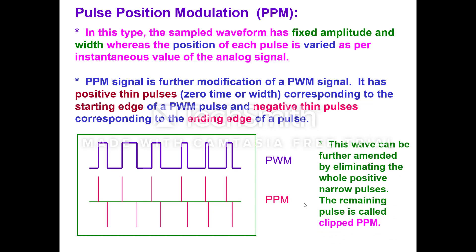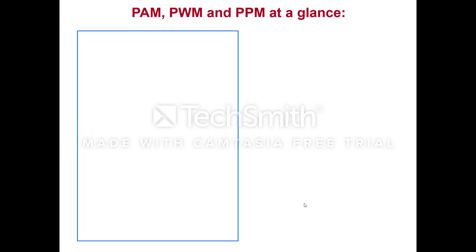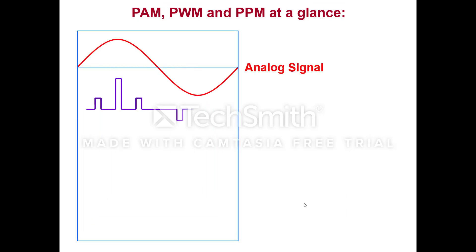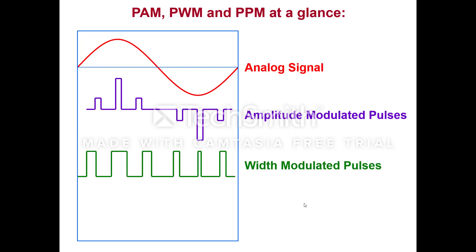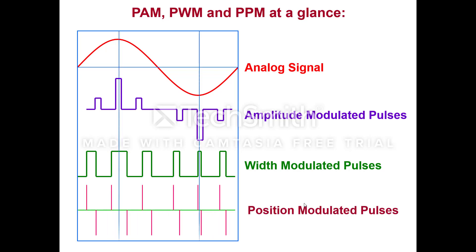This waveform can be further amended by eliminating the positive narrow pulses, and the remaining pulse will then be called as clip PPM. Now we will see PAM, PWM, and PPM at one glance. This is the analog signal, this is the amplitude modulated pulses (PAM), this is PWM pulse width modulation, and this is PPM — pulse position modulation.